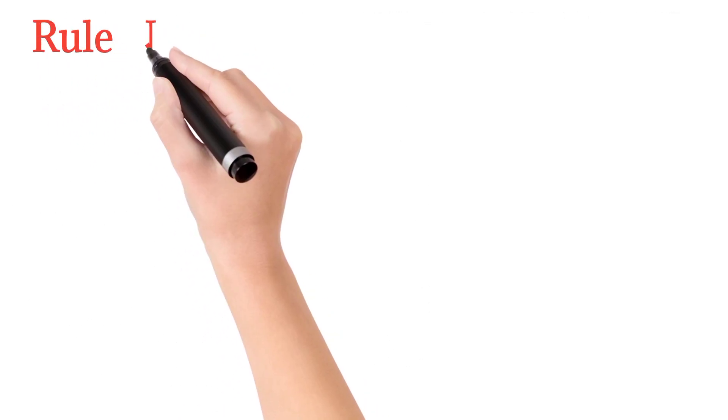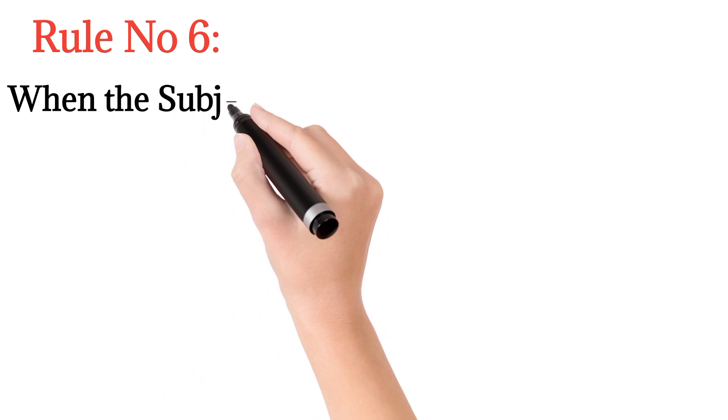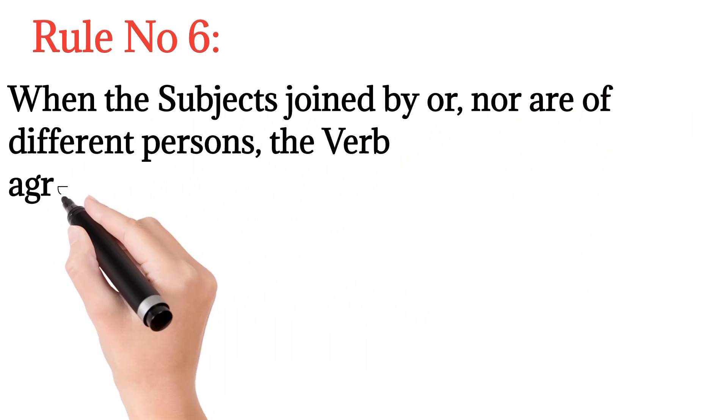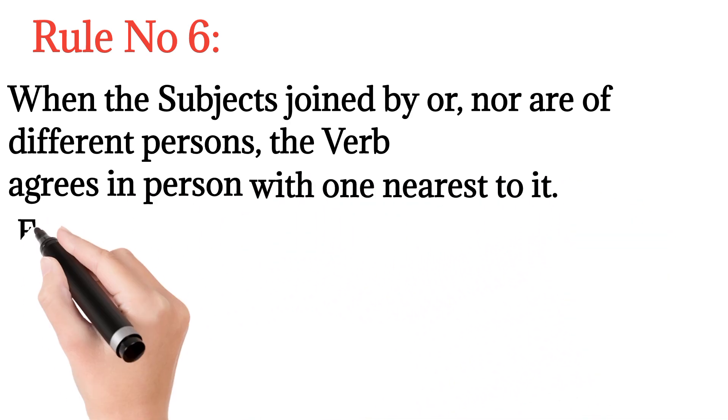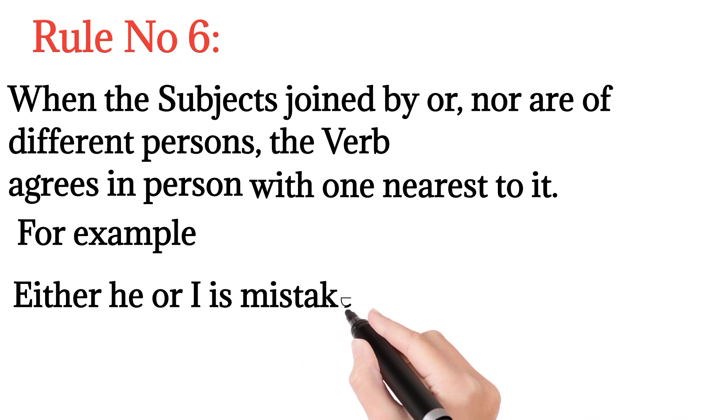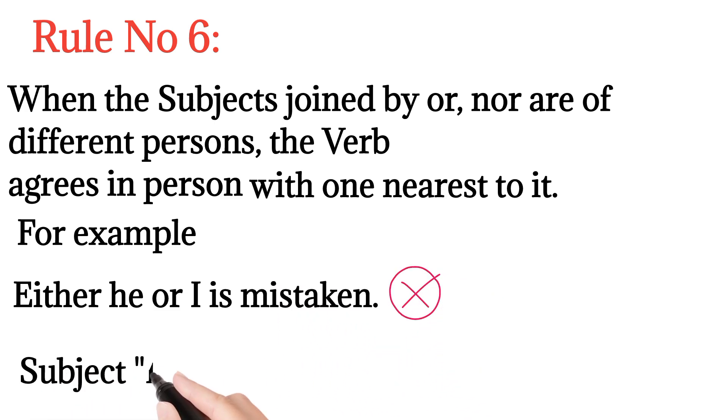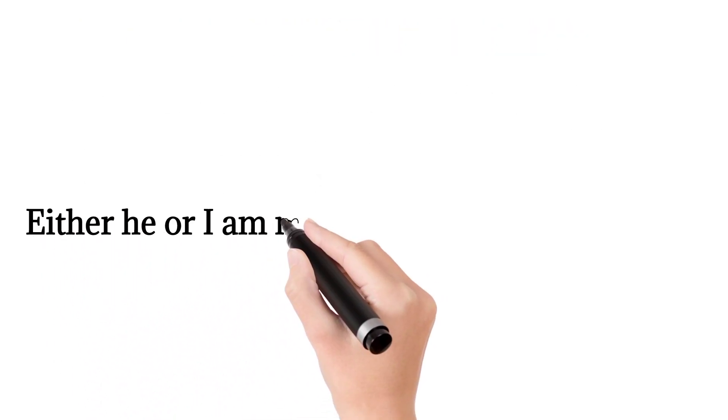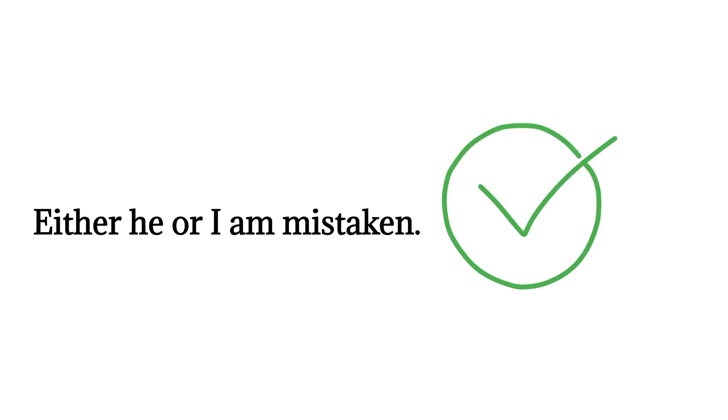Rule number six: When the subjects joined by 'or' or 'nor' are of different persons, the verb agrees in person with the one nearest to it. For example, 'either he or I is mistaken' - here the subject 'I' does not agree with the verb 'is'. Therefore, the correct form of this sentence is 'either he or I am mistaken'.